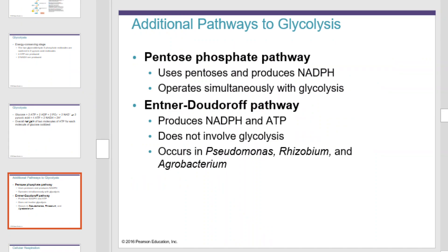As alternatives to glycolysis, some cells use the pentose phosphate pathway, which uses pentoses and produces NADPH, and operates simultaneously with glycolysis. The Entner-Doudoroff pathway produces NADPH and ATP and does not involve glycolysis. It only occurs in select organisms, such as Pseudomonas, Rhizobium, and Agrobacterium.